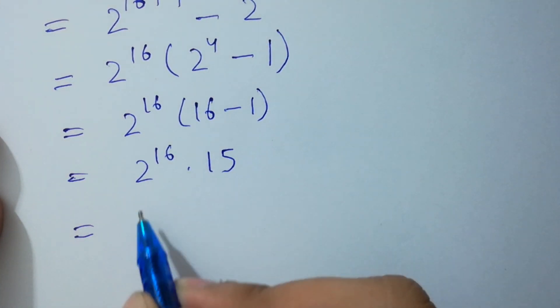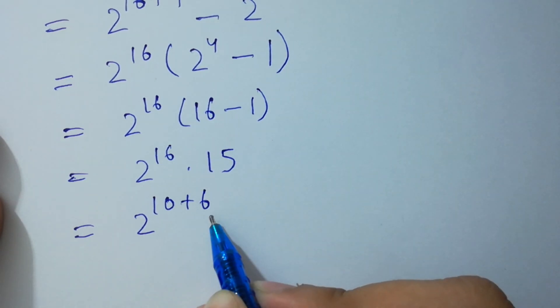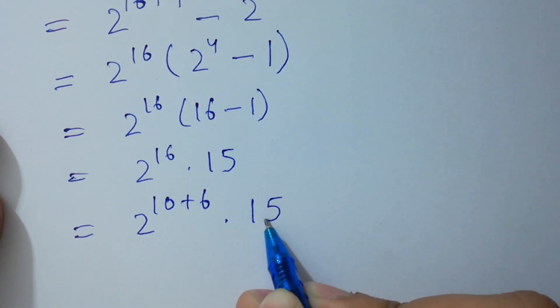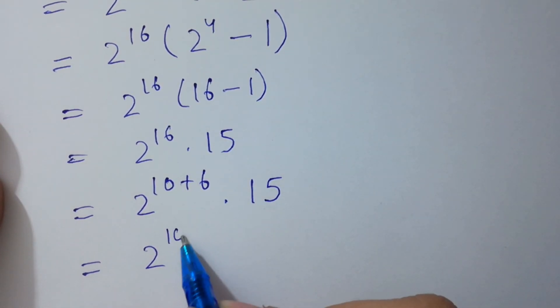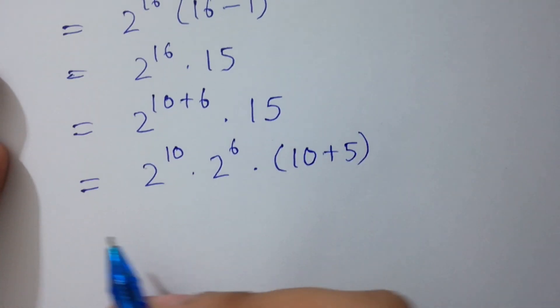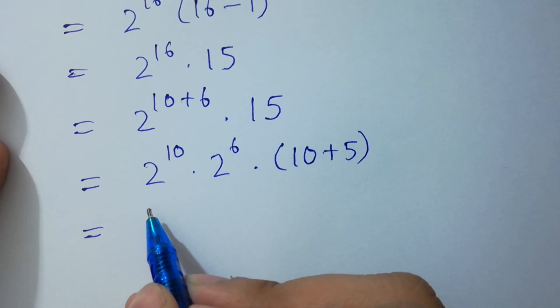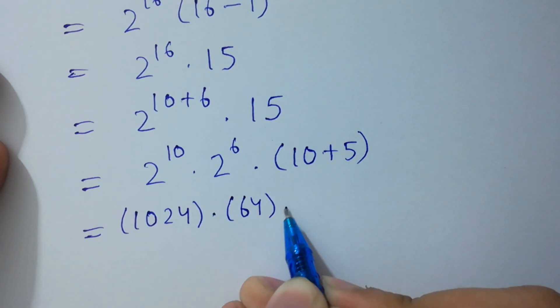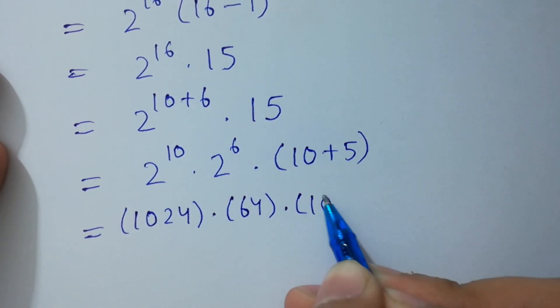Next step here: 2^16 is the same as 2^(10+6) because 10 + 6 equals 16, times 15. And 15 can be written as 10 + 5.